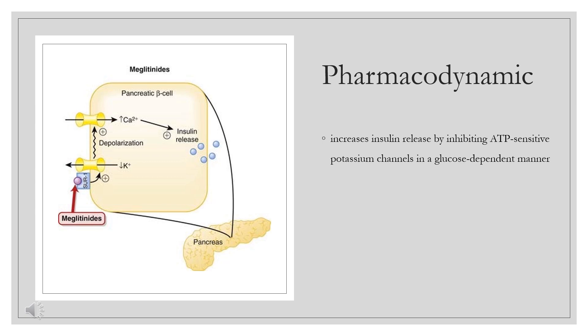Extracellular glucose enters the cell via GLUT2 SLC2A2 transporters. Once inside the cell, glucose is metabolized to produce ATP. High concentrations of ATP inhibit ATP-sensitive potassium channels, causing membrane depolarization. When extracellular glucose concentrations are low, ATP-sensitive potassium channels open, causing membrane repolarization.